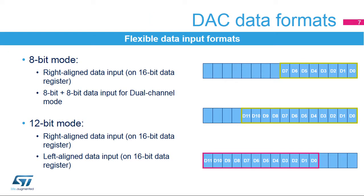The DAC can support different input formats. In 8-bit mode, it's a right-aligned 8-bit data format. In dual-channel mode, it's an 8-bit plus 8-bit data format, in order to provide input data for two DACs simultaneously. In 12-bit mode, either a right- or left-aligned mode can be used for input data.